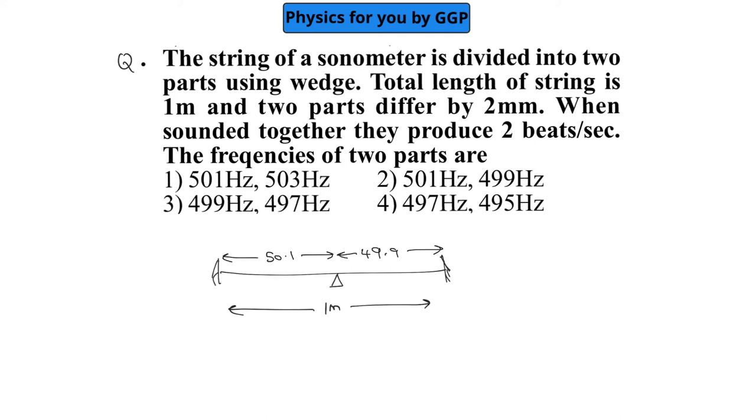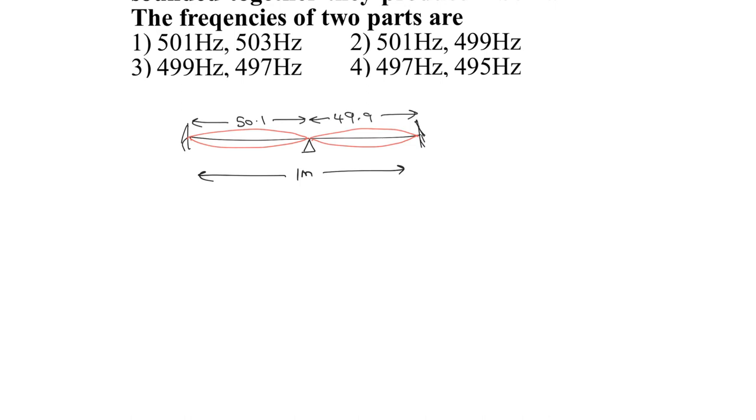When sounded together they produce 2 beats per second. If we consider that they are oscillating in their fundamental mode of oscillation, we can find the difference in their frequencies.